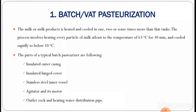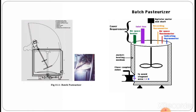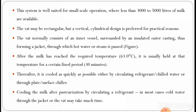This slide shows the diagram of the batch pasteurizer with its different parts as discussed. This system of pasteurization is well suited for small-scale operations where less than 3,000 to 5,000 liters of milk are available. The vat may be rectangular, but a vertical cylindrical design is preferred for practical reasons. The vat normally consists of an inner vessel surrounded by an insulated outer casing, forming a jacket through which hot water or steam is passed.